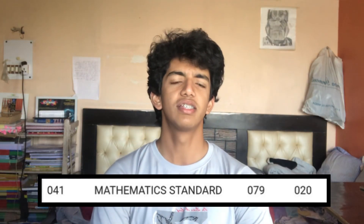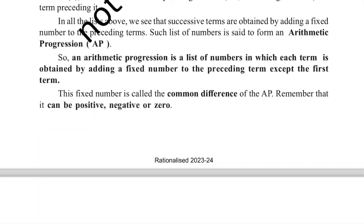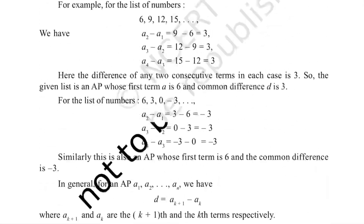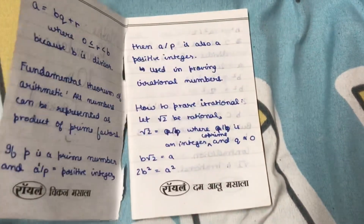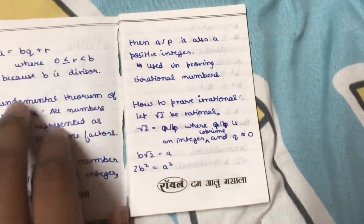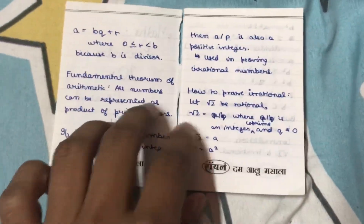Math Basic is easier than Math Standard. The first thing you need to do is read the NCERT for every chapter so that your concepts are clear. Maintain a formula book — write every single formula in that copy and revise it every single day so that you remember the formulas when you're giving the exam.